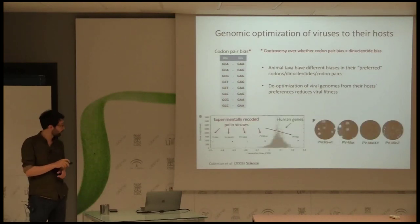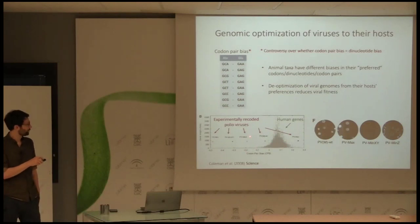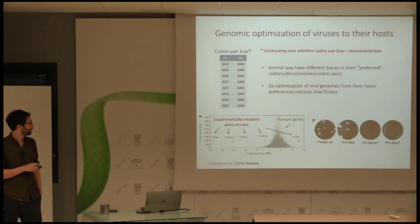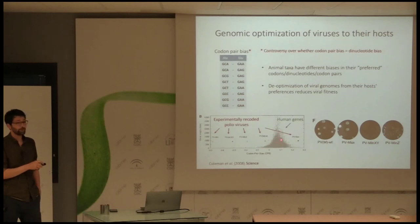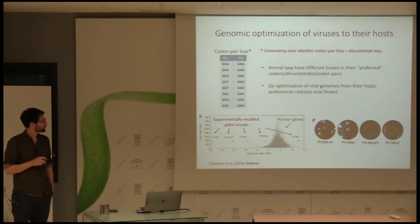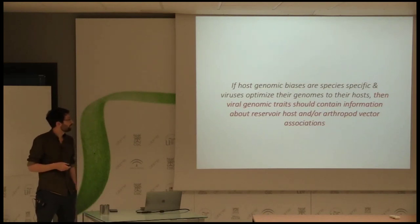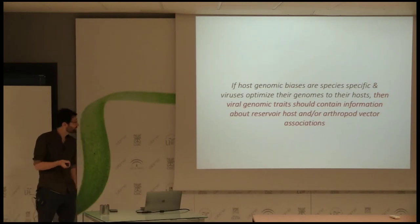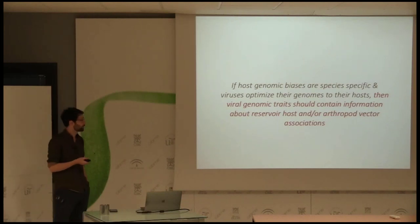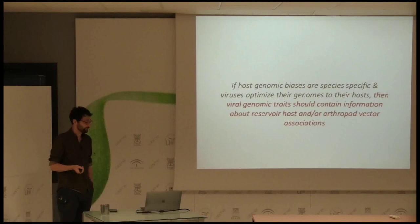The best example is from human poliovirus: researchers took wild-type polioviruses and de-optimized them, keeping the amino acid sequence exactly the same but changing things like the codon pair bias. Once they de-optimized the virus away from the biases in human genes, they effectively attenuated it — those viruses were no longer even able to grow efficiently in cell culture. Taking these observations together — that genomic biases are likely species-specific and viruses optimize their genomes to the host they infect — we hypothesized that the genomic traits of viruses should tell us something about the host or arthropod origins of the viruses in the first place.